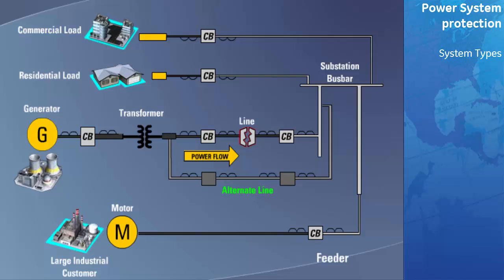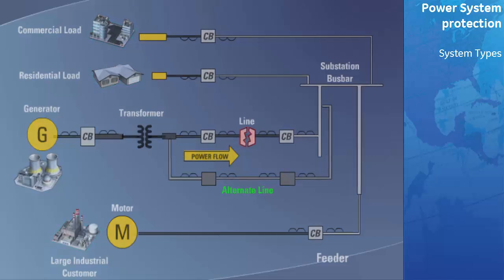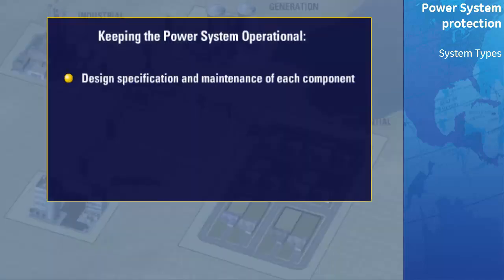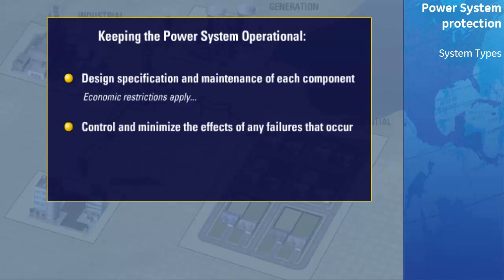Hence, alternate transmission lines may be economically justified, whereas alternates for the power transformers and switchgear would not. The network of power systems now blanketing North America are often interconnected at various points to accomplish this. Since each link in the chain involves a large investment in equipment, alternates are frequently prohibitively expensive. To ensure both maximum return on the investment and to provide reliable service to satisfy customers, the whole power system should be kept in operation. This is accomplished in two ways: the first is by the specification of the design and maintenance of each component to prevent failure; the second is to control and minimize the effects of any failures that do occur. This is where the protective relay fits into the power system.